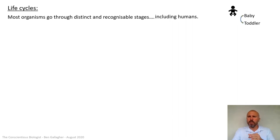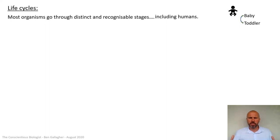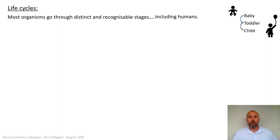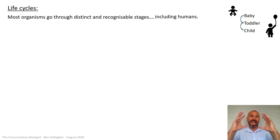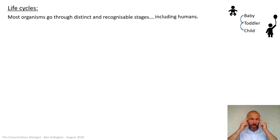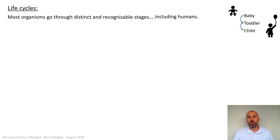This includes humans. You can look at a human and roughly gauge their age because babies, toddlers, and children are very distinct. One of the big differences is the ratio of the head to the body — babies have big heads relative to their body. Your head doesn't actually grow very much as you grow up, certainly not as much as the rest of the body, because the brain needs to develop a huge amount and a lot of that happens early on.